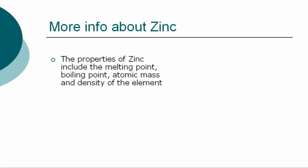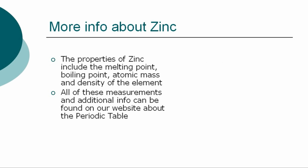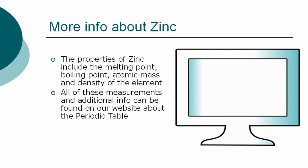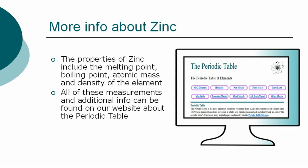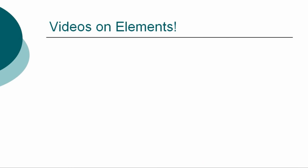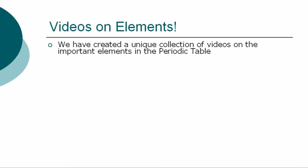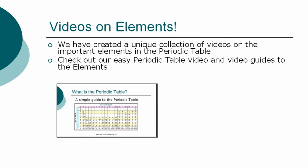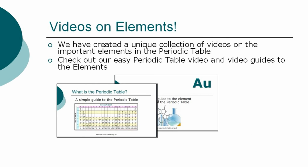The properties of zinc are classified by many other factors, including the melting point, boiling point, atomic mass, and density of the element. All of these precise measurements, together with additional facts and information, can be found on our website. So ends our simple guide to the element zinc. Check out our easy video guides to the other elements via our website.